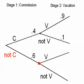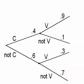Similarly, if event not C occurs in stage 1 — in other words, if the sales representative does not get the commission — a second branch off represents the two options in stage 2. The sales rep either takes the vacation or not. We are told that in this case, the probability that the rep will take the vacation is only 0.3, which means by the complement rule that he will not take the vacation with probability 0.7. Here is the completed probability tree.